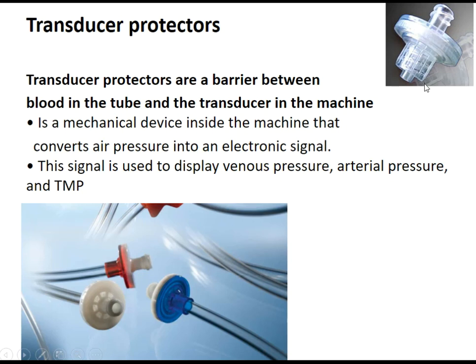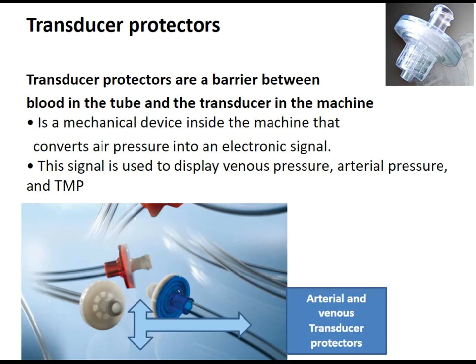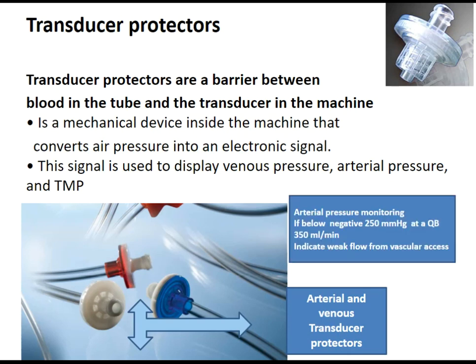The transducer protectors are a barrier between the blood in the tube and the transducer in the machine. It is a mechanical device inside the machine that converts air pressure coming from the blood circuit into an electronic signal. The signal is used to display venous pressure, arterial pressure, and the calculation of transmembrane pressure. An arterial pressure reading below negative 250 mmHg at a QP of 350 mL/min indicates weak flow from the vascular access.